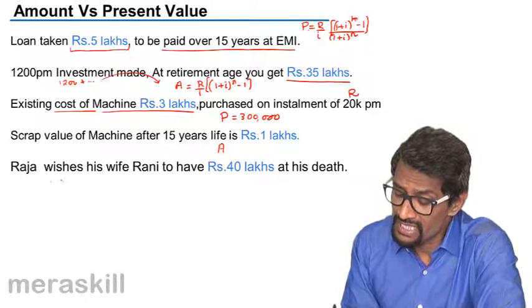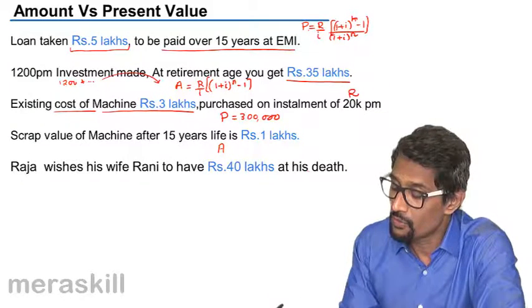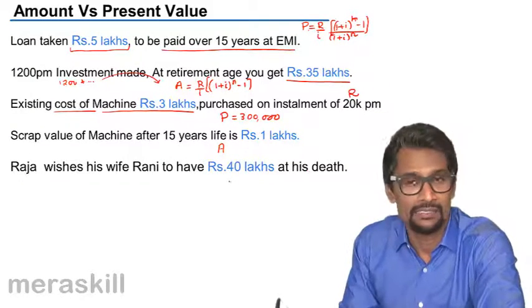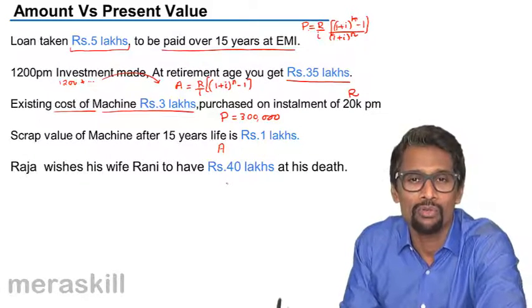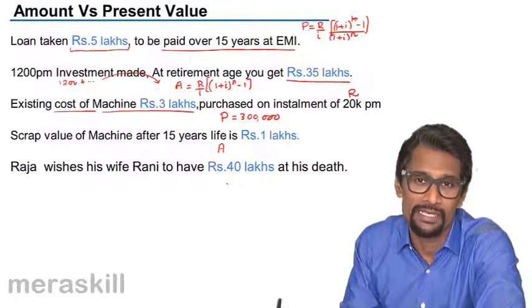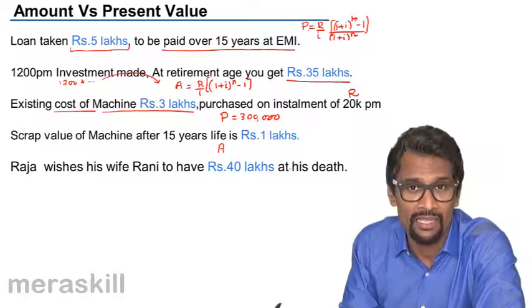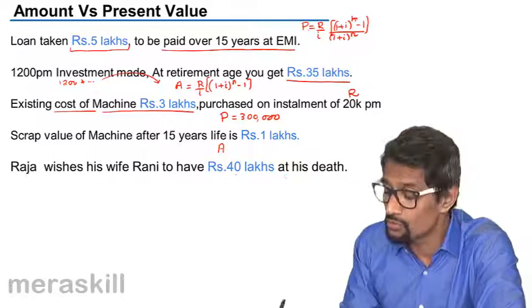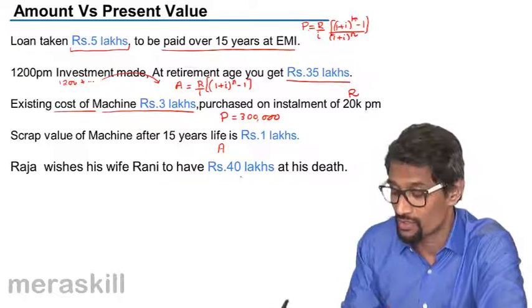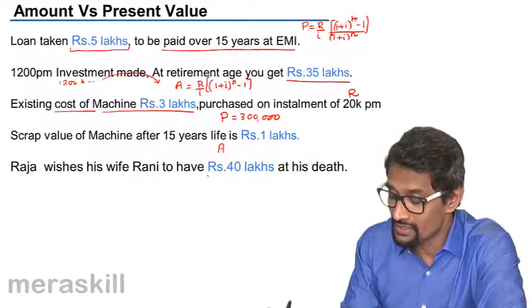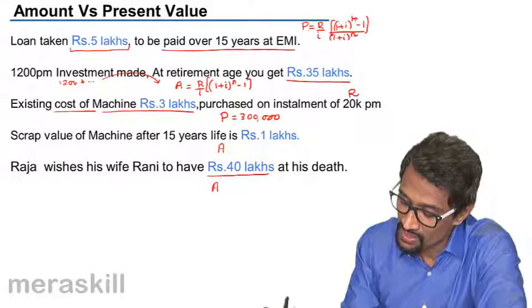Raja wishes his wife Rani to have rupees 40 lakhs at his death, and hence he starts depositing some amount on a regular basis at the end of every year. He starts from today, which should amount to 40 lakhs in the future. So that is again a future value case, and this is going to be the amount A.